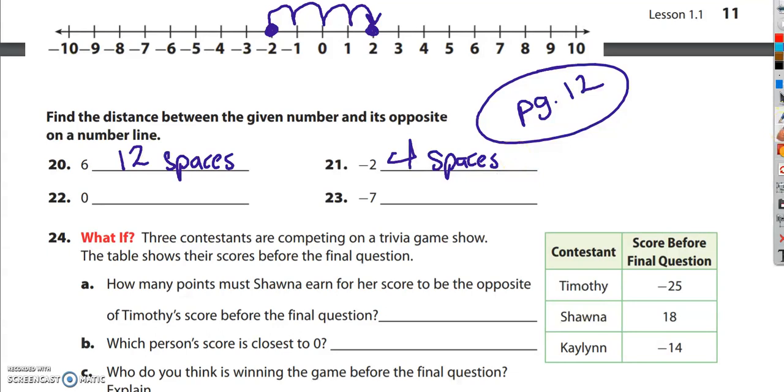The distance between 0 and its opposite. Well, 0 is its own opposite. So 0 is here and 0's opposite is also here. To get from 0 to itself is 0 spaces.